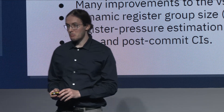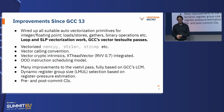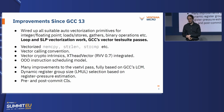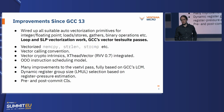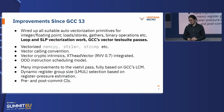Besides that, there have been many improvements to the VSET VL pass. It's now fully based on GCC's loop invariant code motion. We can dynamically select the ELMO for a code snippet based on a register pressure estimate at vectorization time. We also have pre- and post-commit CIs which ensure we don't check in something that doesn't compile, makes performance worse, and so on.